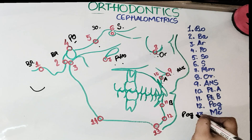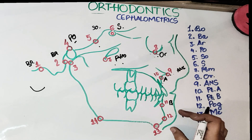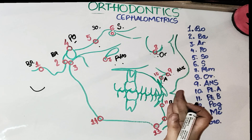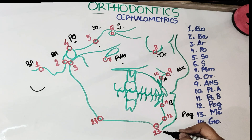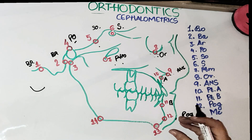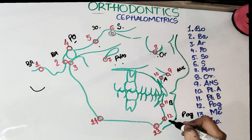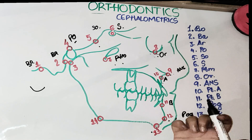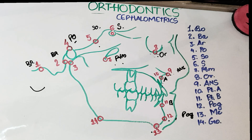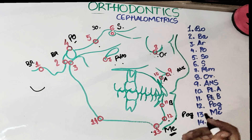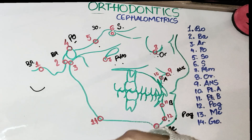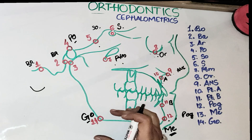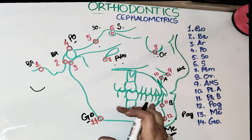The twelfth point is Pogonion, which is the most anterior point on the chin. Don't get confused between Pogonion and Menton. Pogonion is the anteriormost point on the chin, while Menton is the inferior point on the mandibular symphysis — the inferiormost point. Gonion is present on the angle of the mandible and is the lowermost point at the angle of the mandible.